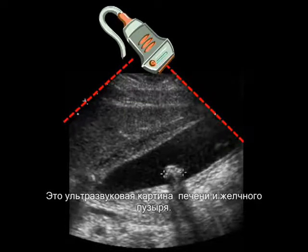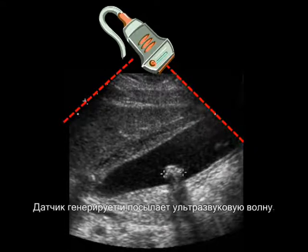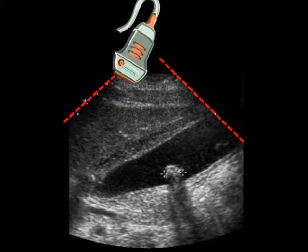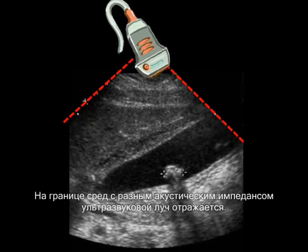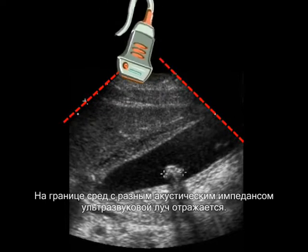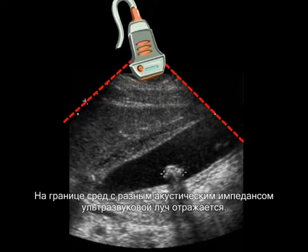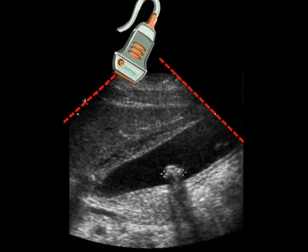This is an image from her ultrasound. How does ultrasound work? The ultrasound transducer sends out a sound beam. The sound beam may strike an area of two differing acoustic impedances and produce a reflection.